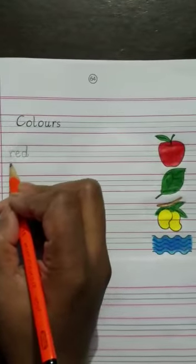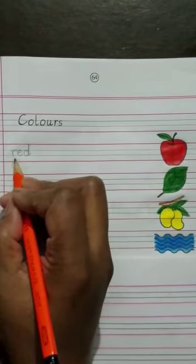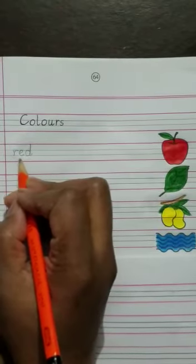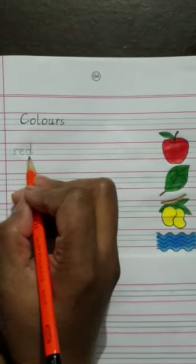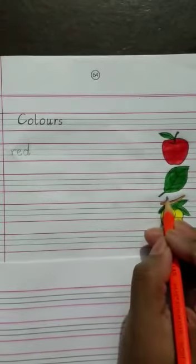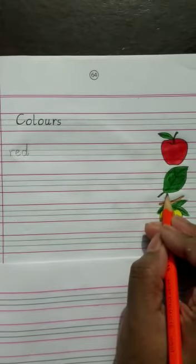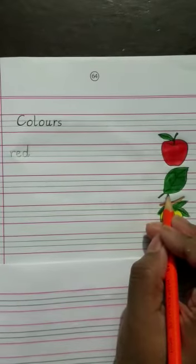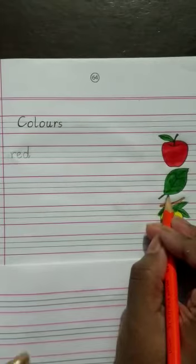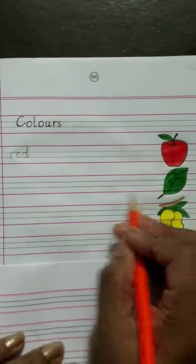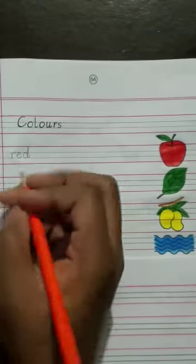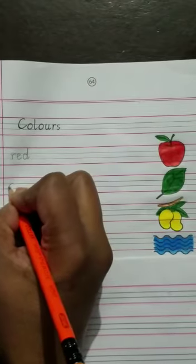Now what is this? This is a leaf. What color is the leaf? The leaf is green. Now here we will write green, G-R-E-E-N, green.